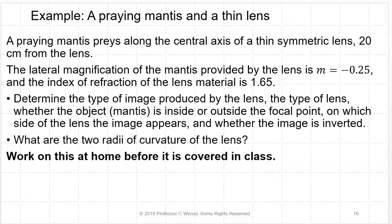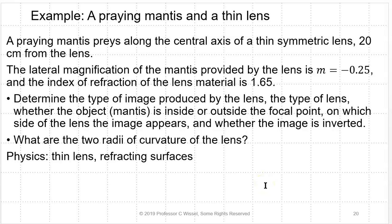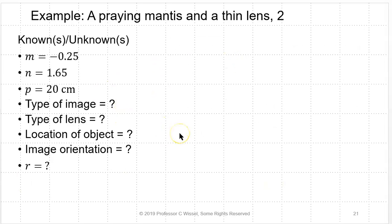A praying mantis prays along the central axis of a thin symmetric lens 20 centimeters from the lens. The lateral magnification provided by the lens is M equals minus 0.25. The index of refraction of the lens material is 1.65. Determine: the type of image produced by the lens, the type of lens, whether the mantis is inside or outside the focal point, on which side of the lens the image appears, and whether the image is inverted. Also, what are the two radii of curvature of the lens? The physics is thin lenses and refracting surfaces. Write down knowns and unknowns, paying particular attention to signs.